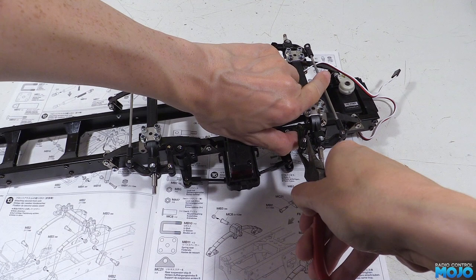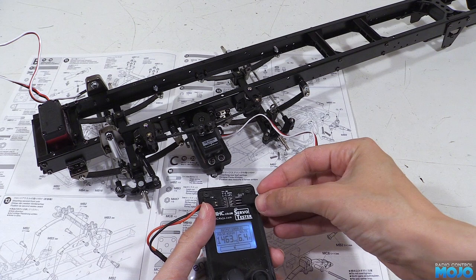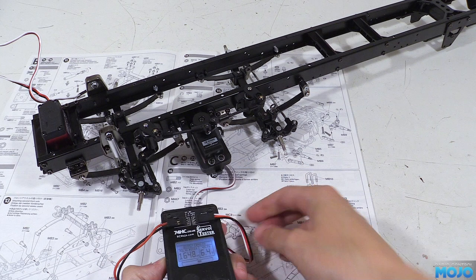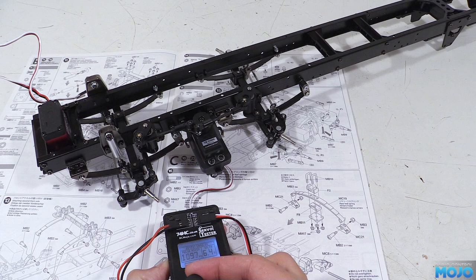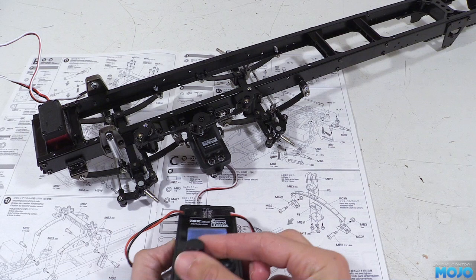If we hook up the servo tester we can see how it all works. There's a bit of excess travel but it's not far off. The main thing to note is just how reduced the travel on the rear axle is. If we do end up with a twin steering servo setup we'll have to put the system together with the same ratio in mind.